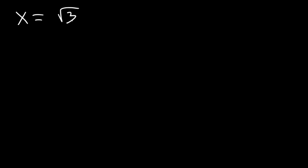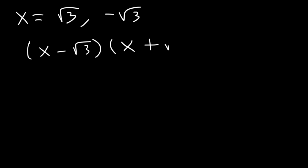What if you're given just one of the two solutions? Whenever you're dealing with radicals, they always come in pairs. So if you have positive root 3, the other solution must be negative root 3. Thus the factored form is (x minus root 3)(x plus root 3).